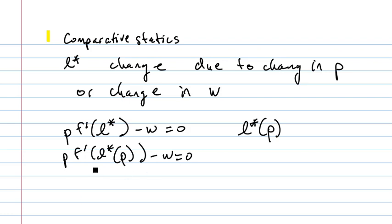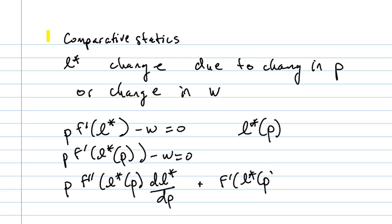And when I do that, I get first times the derivative of the second: P F double prime of L star of P dL star dP. So if L star is a differentiable function of P, we have that. Plus the second times the derivative of the first, the second is just F prime of L star of P.